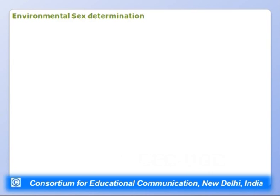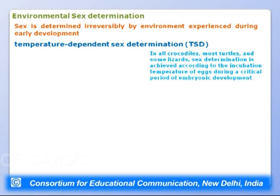Apart from genic and cytoplasmic sex determination, there is environmental sex determination, where sex is determined irreversibly by environmental experience during early development. The most common example is temperature-dependent sex determination (TSD), found in all crocodiles, most turtles, and some lizards. Sex is determined by the incubation temperature during a critical period of embryonic development.